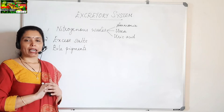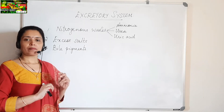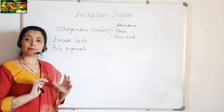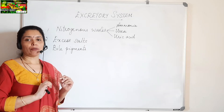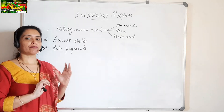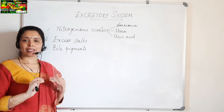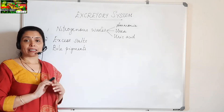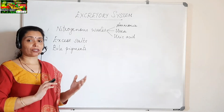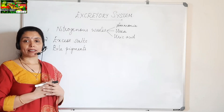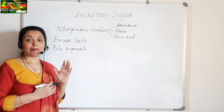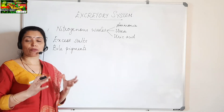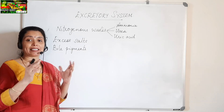Bile is the breakdown product of the hemoglobin of RBCs and is produced in the liver. There are two types of pigments present in bile: number one is bilirubin, and number two is biliverdin. These pigments give the characteristic yellowish-green color to bile. Bile is released into the duodenum part of the small intestine, where it makes the acidic chyme alkaline. Its second function is to help in the emulsification of fats — the large fat molecules are broken down into small fat droplets on which enzymes can act.